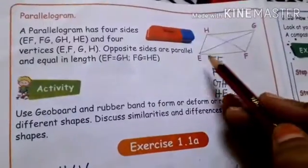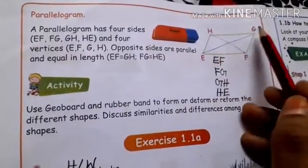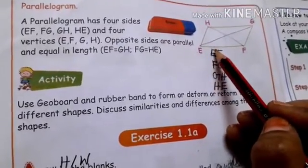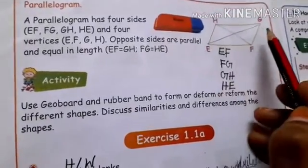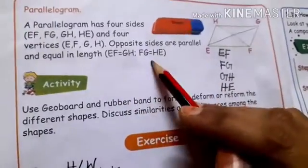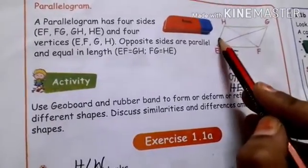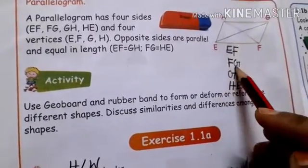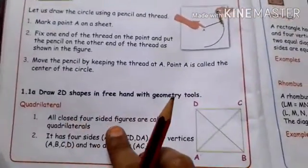Parallelogram: a parallelogram has four sides — EF, FG, GH, and HE — and four vertices. The opposite sides are parallel and equal in length: EF equals GH, and FG equals HE. A parallelogram is like a rectangle shape where opposite sides are equal.